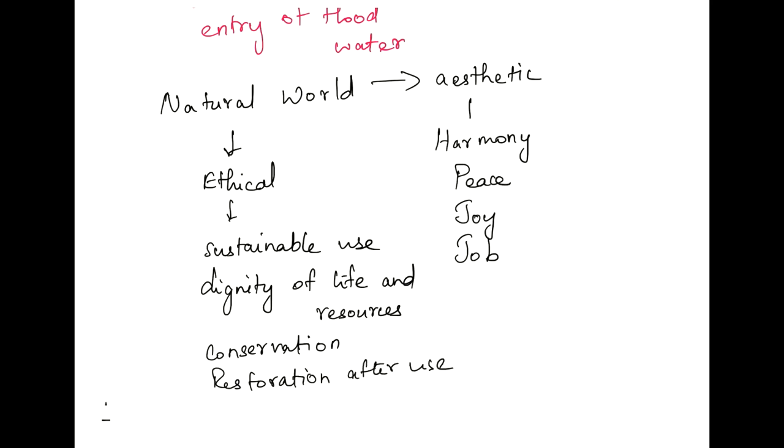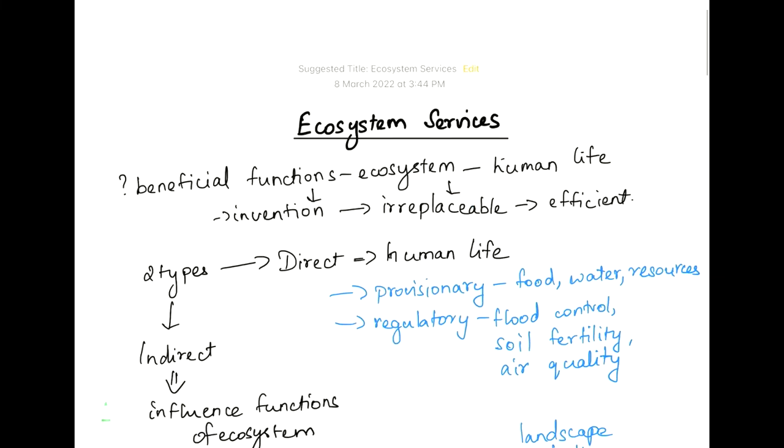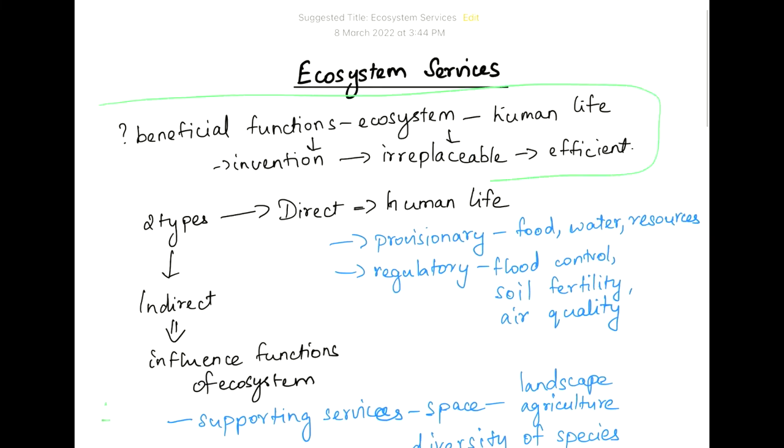Thus in today's topic on ecosystem services, we defined ecosystem service in our own words. We found out two types of ecosystem service to be direct and indirect.